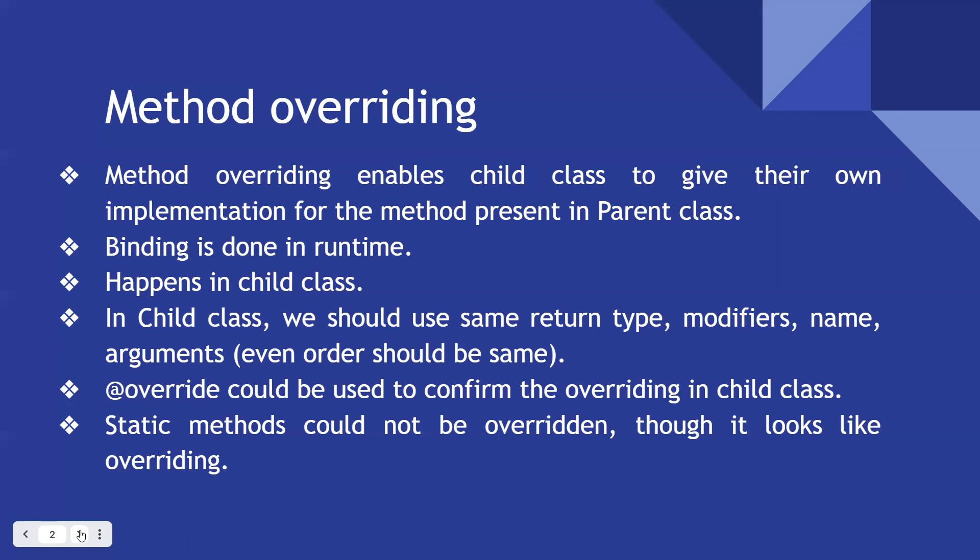If you mistakenly change the return type or method name while trying to override, we have the @Override annotation to identify that. It confirms that you are overriding a method from your parent class. If you make any mistake, it will clearly show that you are not overriding — you are creating a new method. So use @Override to confirm you are overriding exactly like the parent class method.